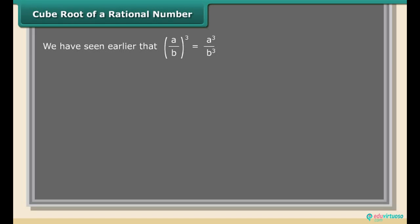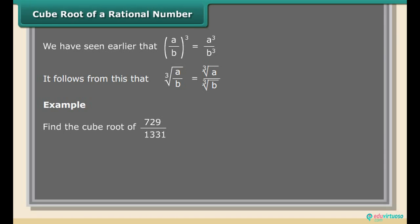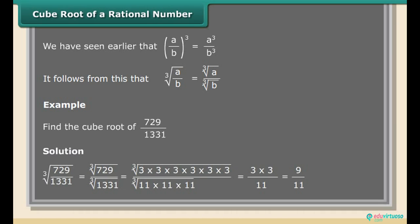Cube root of a rational number: We have seen that (a/b)³ = a³/b³. It follows that ∛(a/b) = ∛a / ∛b. Example: Find the cube root of 729/1331. Solution: ∛(729/1331) = ∛729 / ∛1331 = ∛(3×3×3×3×3×3) / ∛(11×11×11) = 9/11.